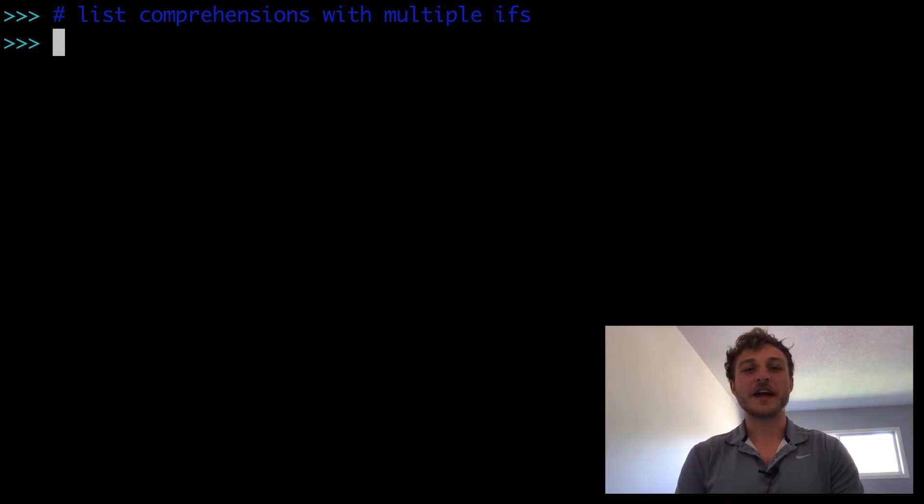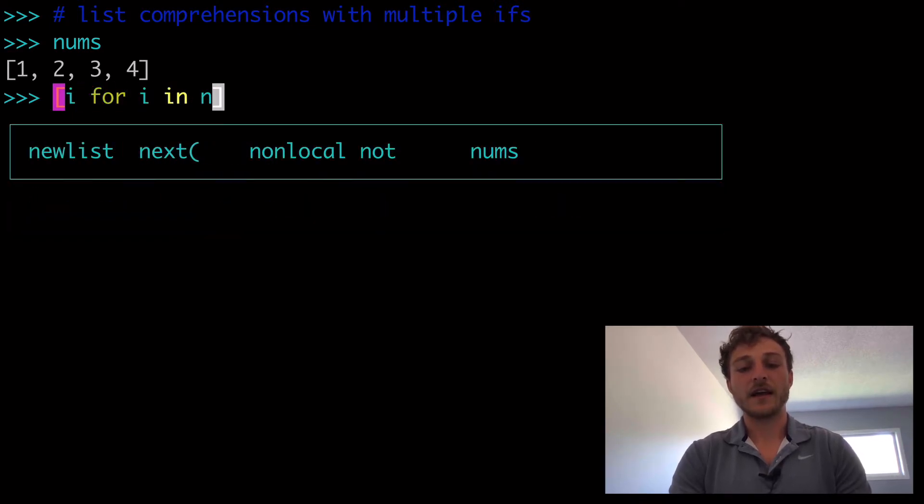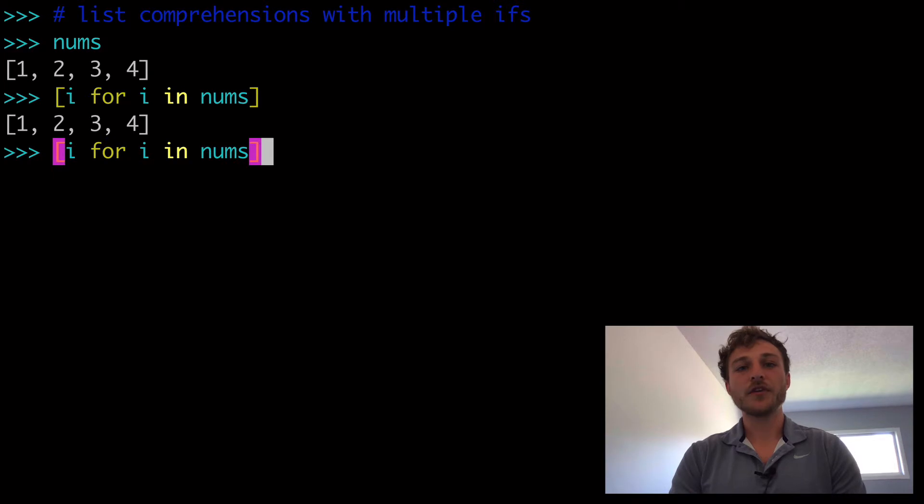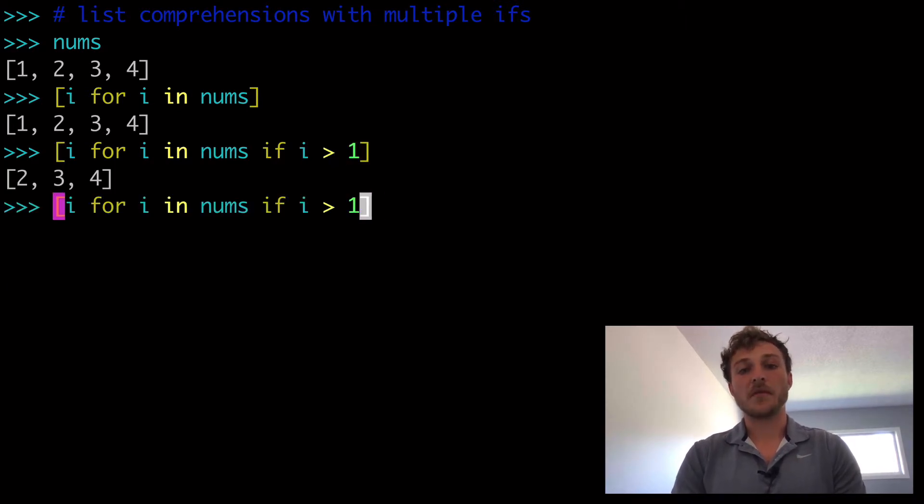Today, list comprehensions with multiple if statements. So we'll get right into it. We have a list called nums, and we can create a list comprehension like i for i in nums. Most people know that you can add one if statement to the right side of this list comprehension and do something like if i greater than 1, if i greater than 2, and we're returning everything greater than 2.